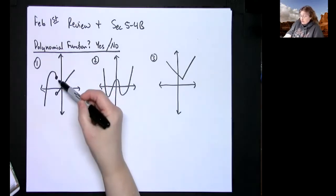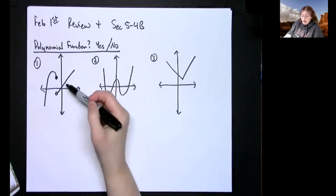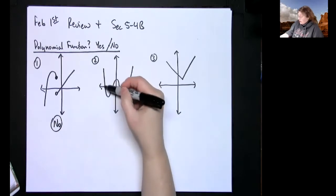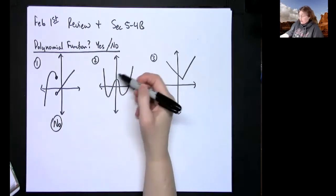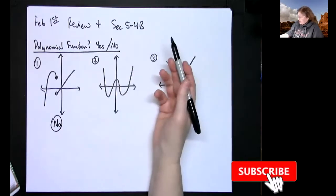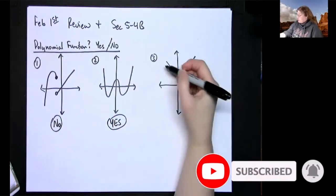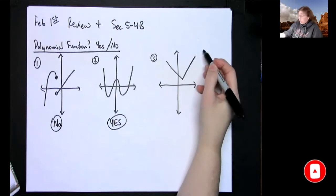So this one, as you can see, I had to lift my pencil to draw it, so it is not continuous. So no, it is not a polynomial function. This one, smooth and continuous, I could draw that entire thing without lifting my pencil, so yes, this one is a polynomial function.